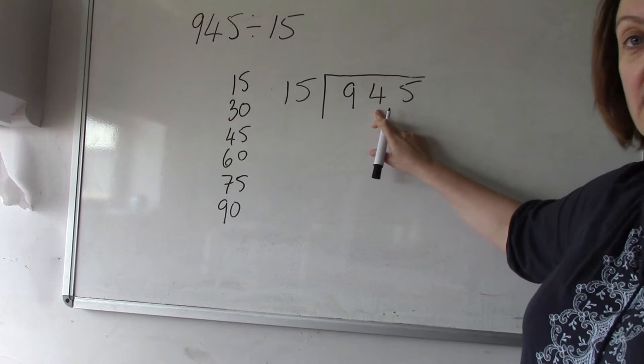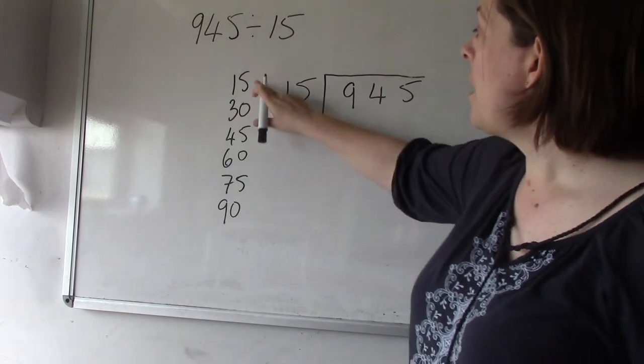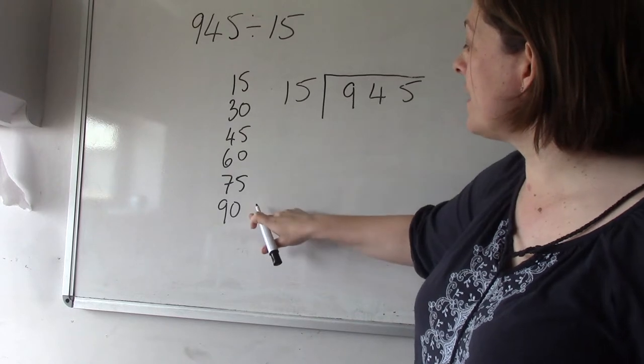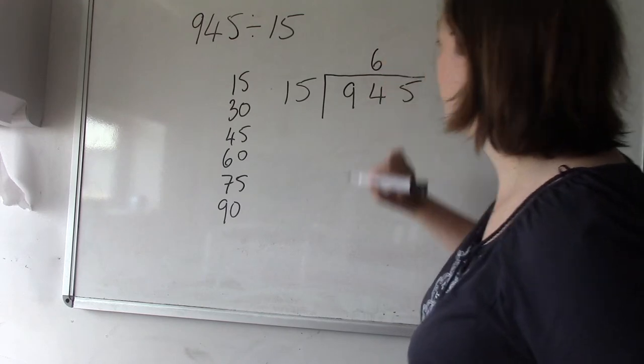So 90 is just 4 less than 94, so that's how many 15s go into it. We count it up: 1, 2, 3, 4, 5, 6. There are 6 15s make 90, which means there are 6 15s in 94.